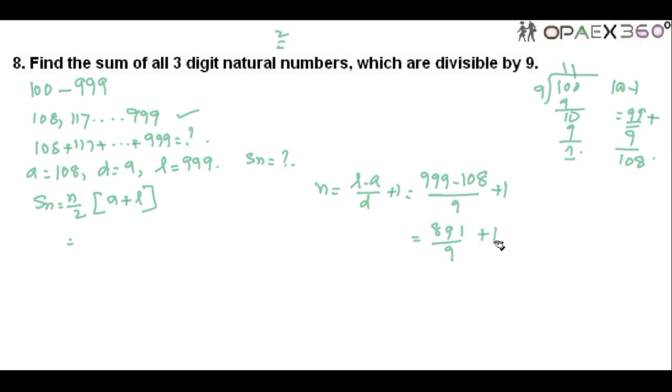891 by 9 plus 1. 9 nines are 81, balance 81, 99 plus 1. So N is equal to 100.